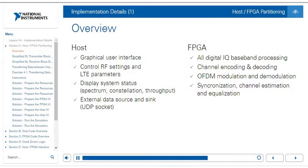The FPGA is going to have the brunt of the signal processing — all the digital IQ baseband processing, the channel encoding and decoding, the OFDM modulation and demodulation, and the synchronization, channel estimation, and equalization are all implemented on the FPGA.